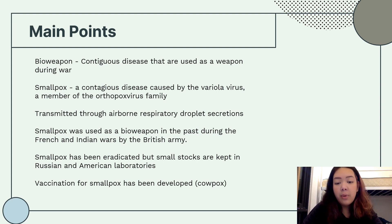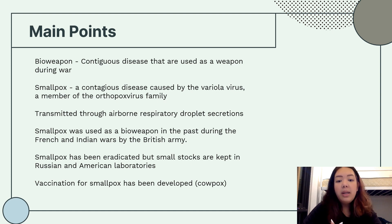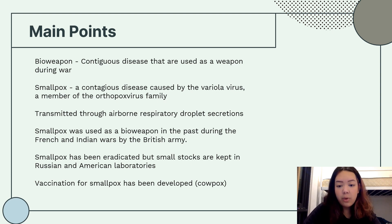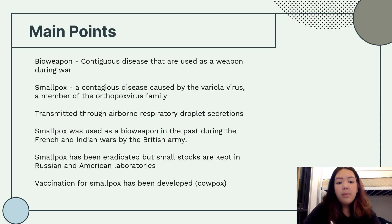Smallpox is transmitted through airborne respiratory droplet secretions, meaning the disease spreads through coughing, sneezing, laughing, and close personal contact with an infected person. Smallpox was used as a bioweapon during the French and Indian Wars by the British Army, who purposely spread blankets used by smallpox patients to spread the disease to enemies. Smallpox has since been eradicated and only small stocks are kept in secure Russian and American laboratories. A vaccine has also been developed for smallpox using cowpox.